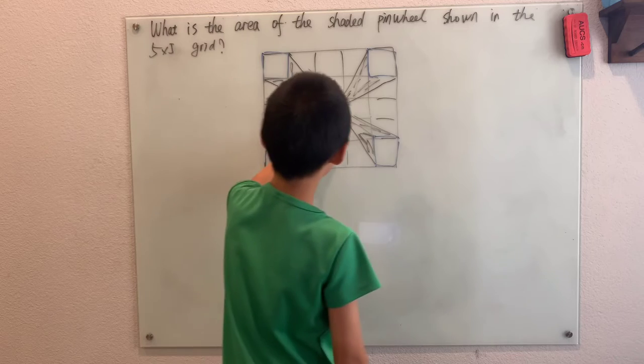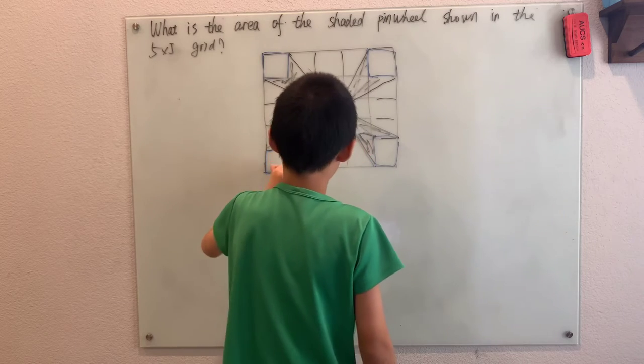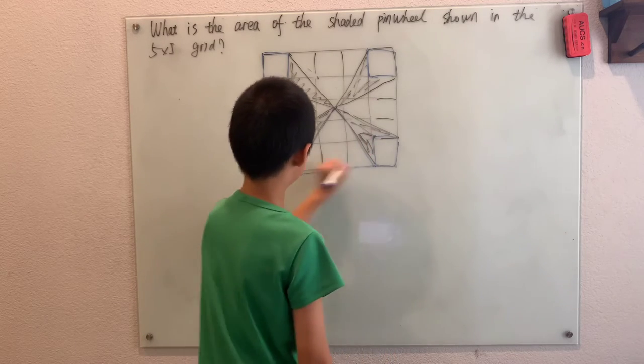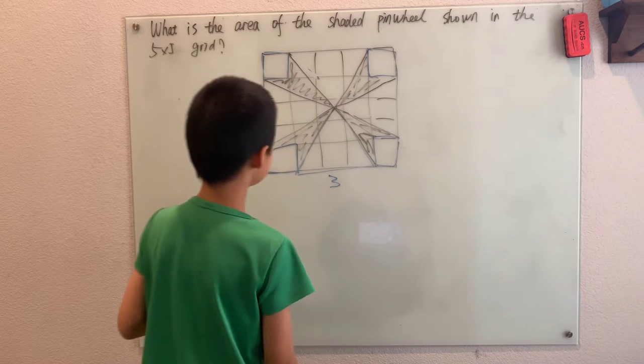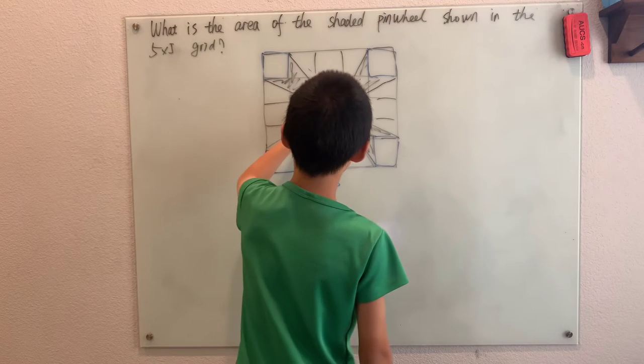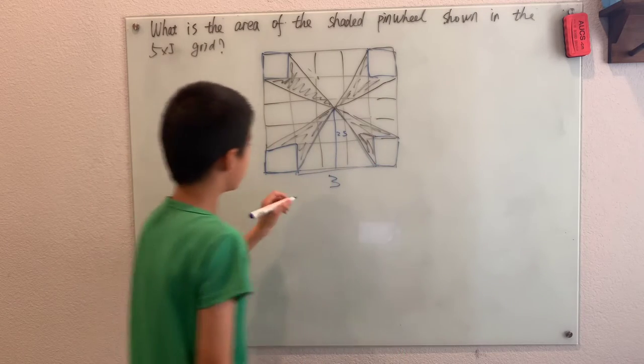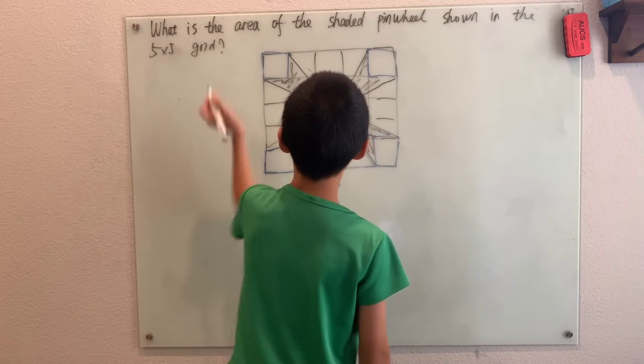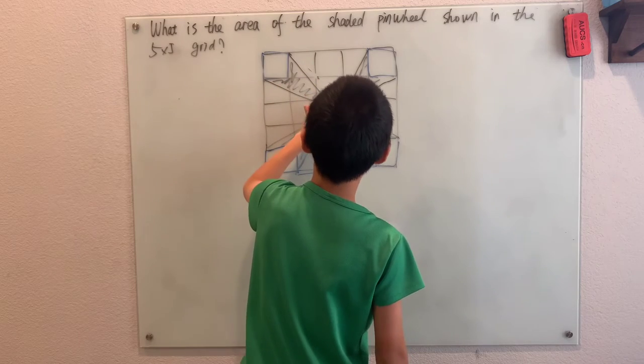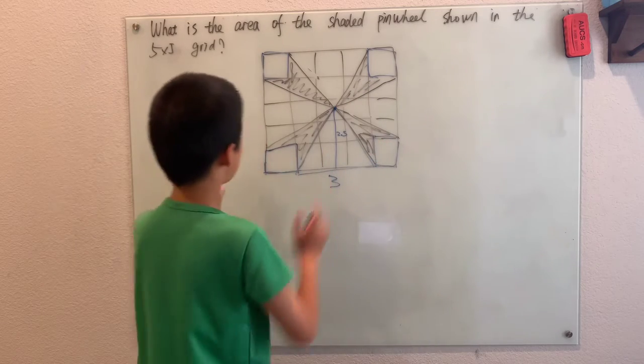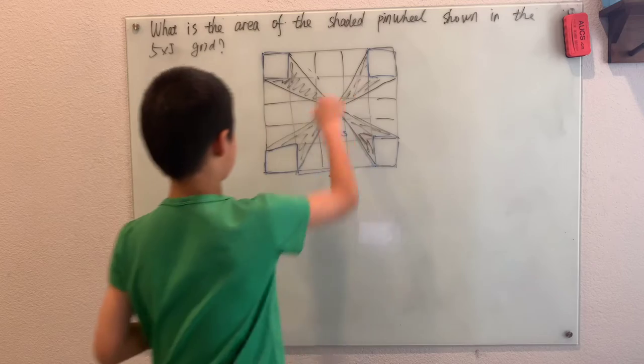So now we have these triangles that are in the middle. Well, these have base 1, 2, 3, and height 2.5. Because as you can see, each pinwheel, or each hand, meets in the center of that center square.